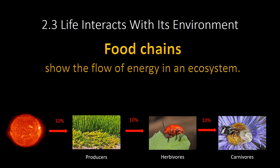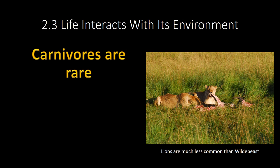What that means is this: carnivores are rare. If I have 100 pounds of plant material, at best I can only support 10 pounds of herbivores and one pound of carnivore. That's why we don't have a lot of carnivores in the world. We have way more herbivores and way more plants than animals, at least in total mass. Most energy is lost as you go up the food web or food chain.